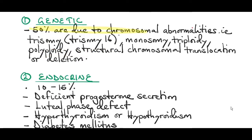About 50% of early miscarriages are due to chromosomal abnormalities. Some of these chromosomal abnormalities are trisomies — Trisomy 16 is the most common. Others are monosomy, triploidy, polyploidy, and structural chromosomal translocation or deletion abnormalities.